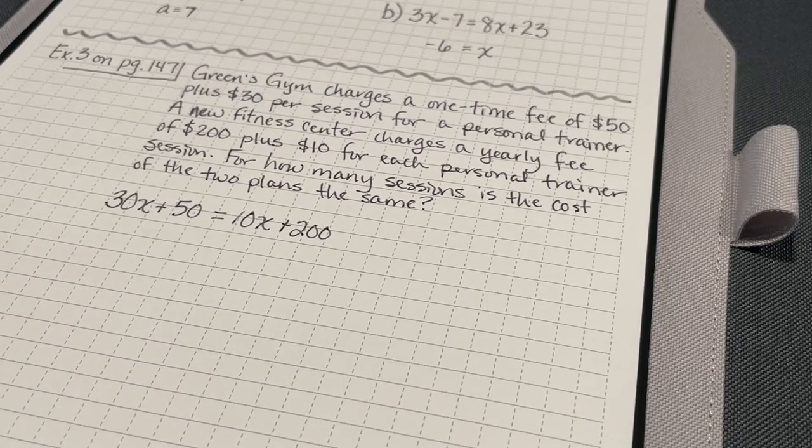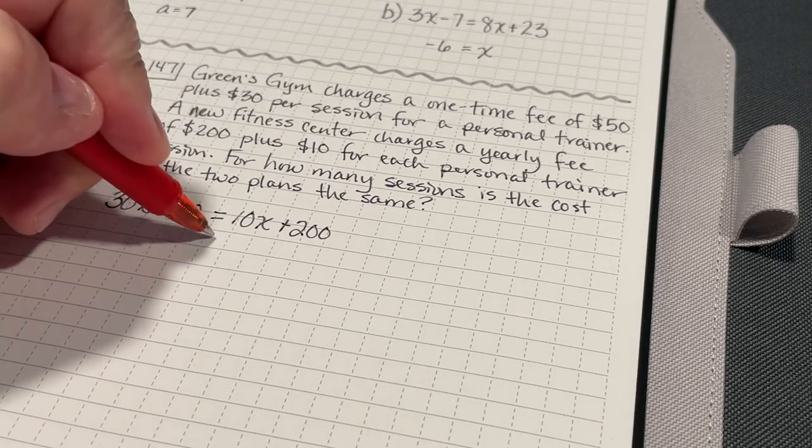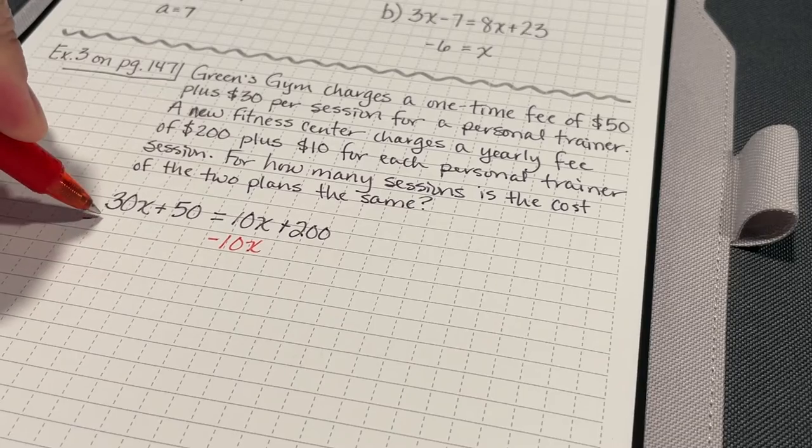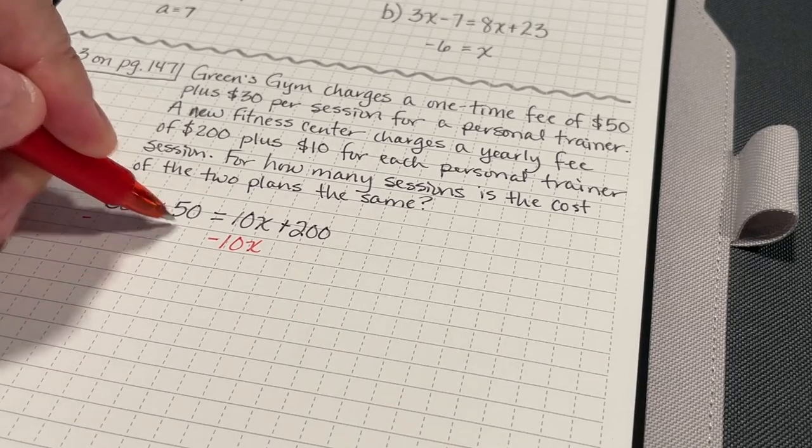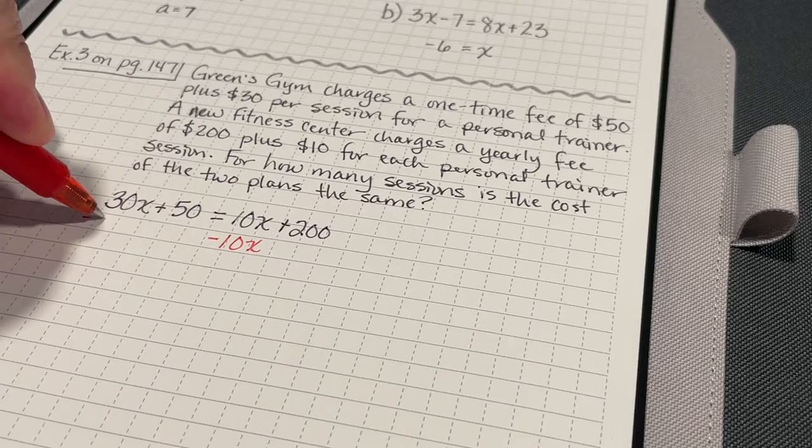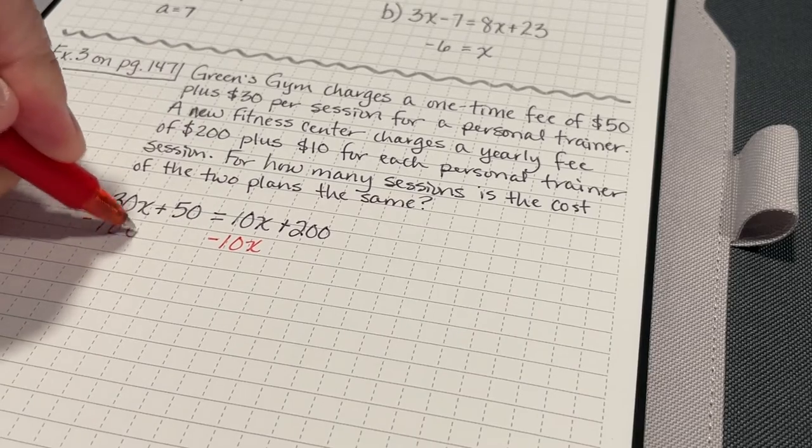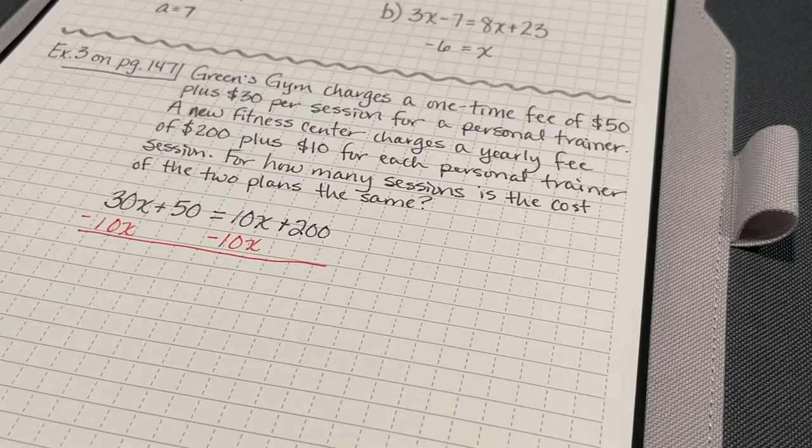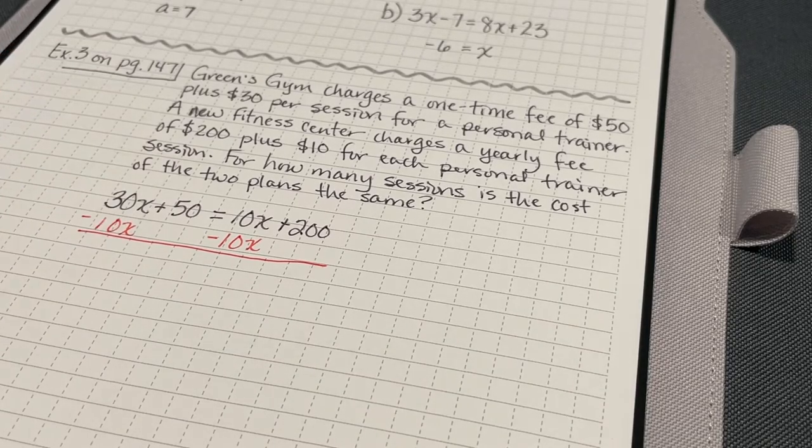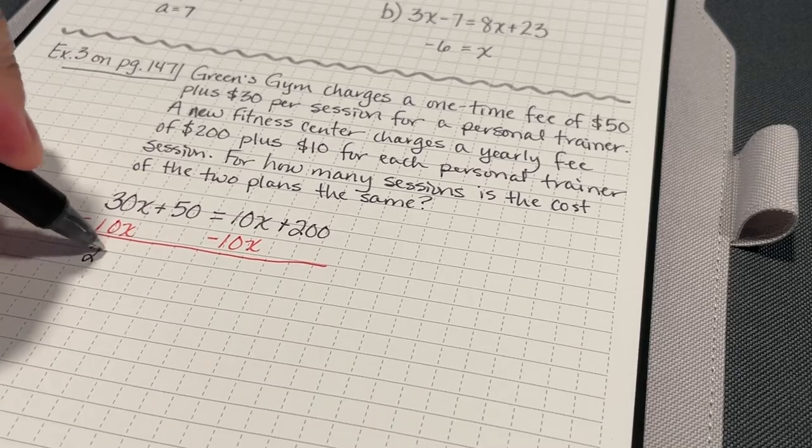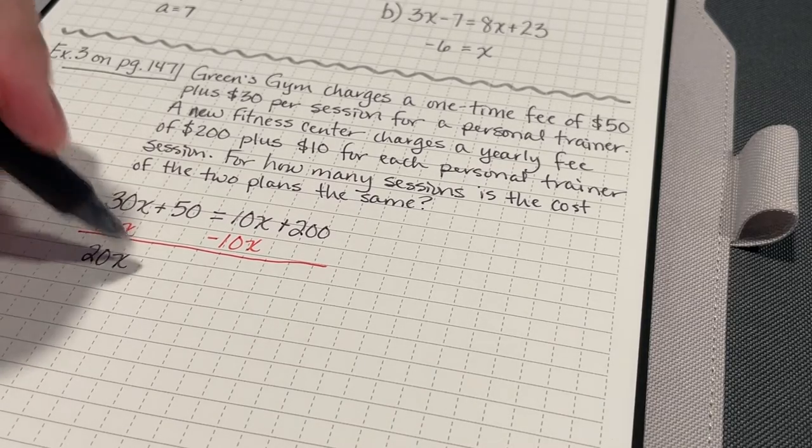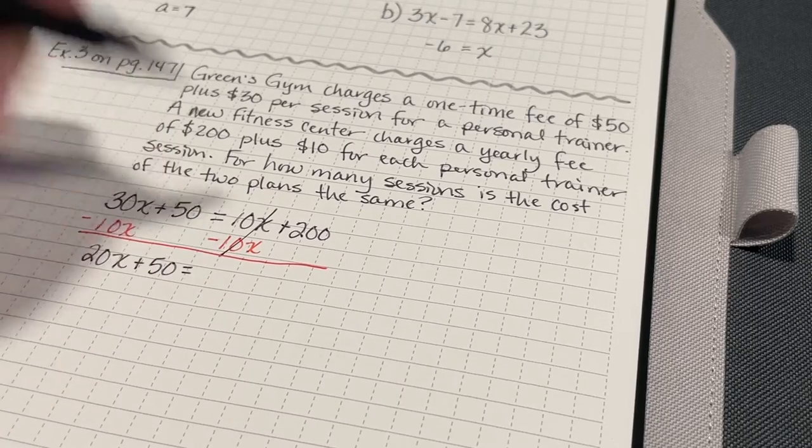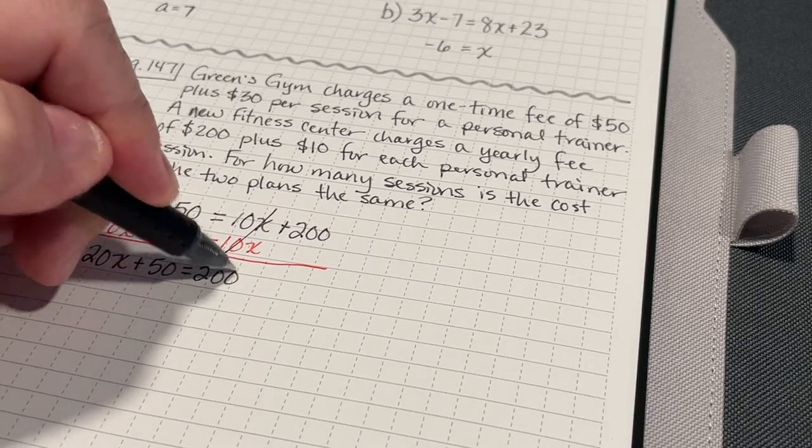Okay. So, here's my first step. I am going to subtract 10x from both sides. I could have subtracted my 50 and brought it over here, but I'm just going to start with my x's. 30x minus 10x. That's going to be 20x plus 50 equals, that's going to be 0. So, it's going to equal 200.